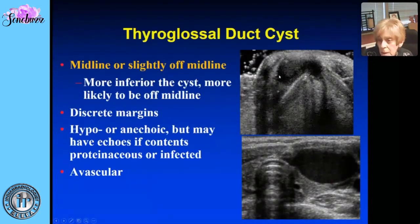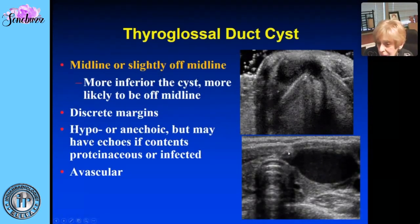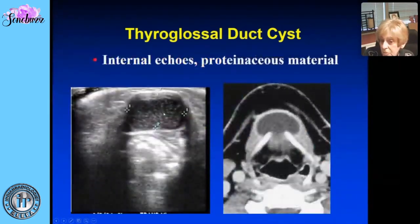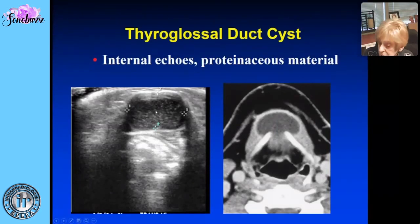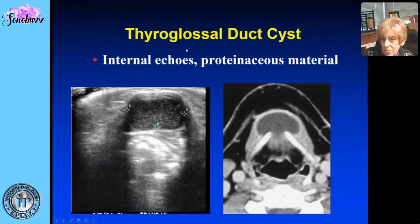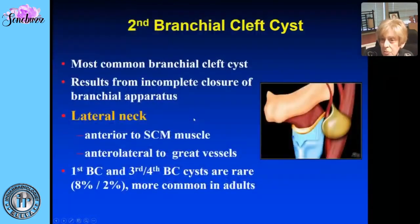Here is the hyoid bone with the midline cystic mass — that's the thyroglossal duct cyst. Lower down, at about the level of the thyroid, here's a cyst that's slightly off midline. You can see echoes within it — this doesn't necessarily mean it's infected; it can be proteinaceous material. And here's the CT showing the midline cystic lesion that's classic for thyroglossal duct cyst.